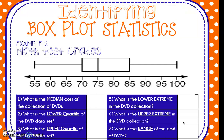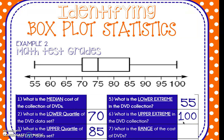All right, so our median here is 75. The lower quartile is 70. The upper quartile is 85. The interquartile range is 15. The lower extreme is 55. The upper extreme is 100. So that makes the range altogether 45. Hopefully everybody got check marks for all of those.